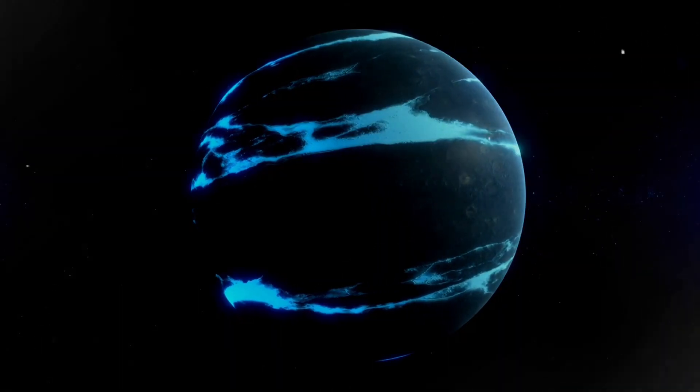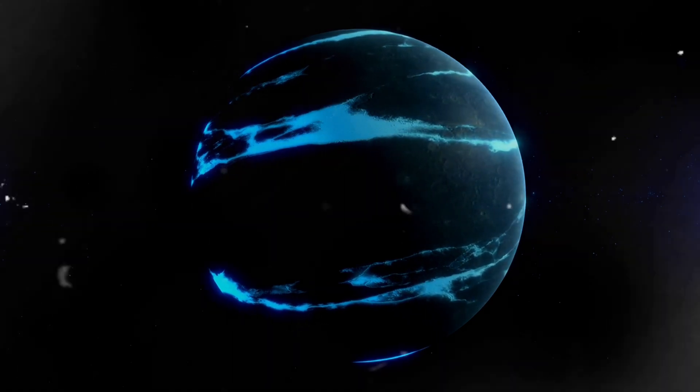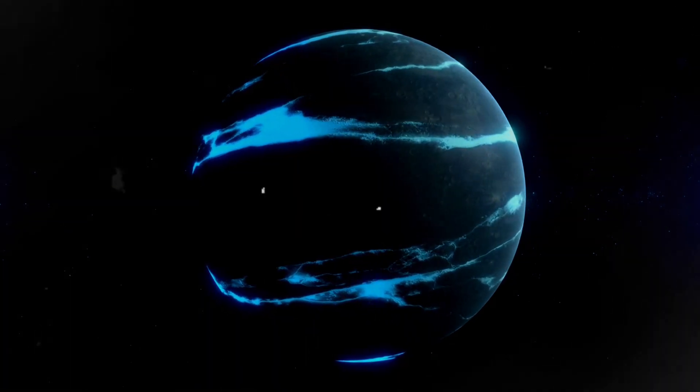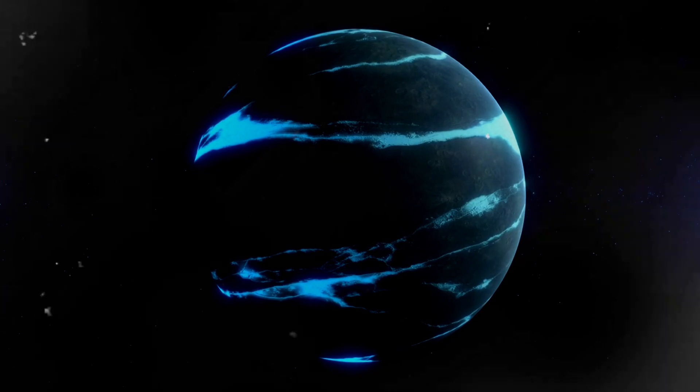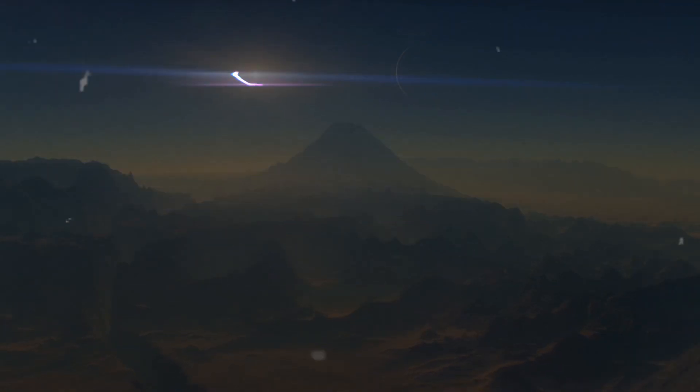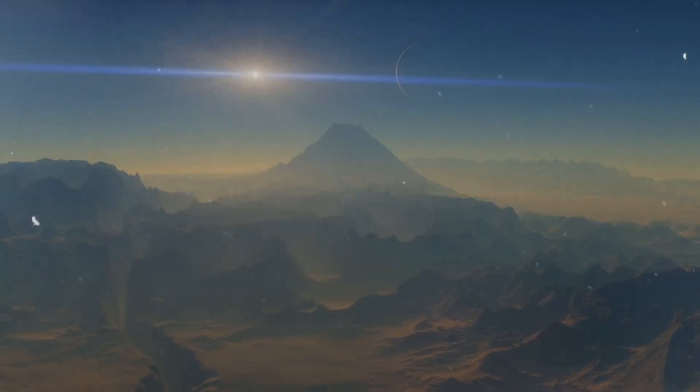Contrary to expectations, the image of an exoplanet appears as a spot rather than the anticipated exotic panorama. Nevertheless, this spot provides scientists with the necessary information to examine the exoplanet's characteristics, including color, vegetation, rotation, and weather seasons.